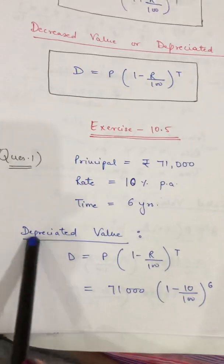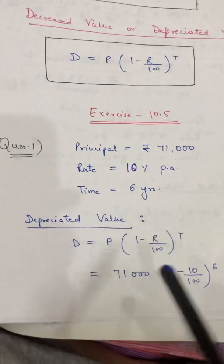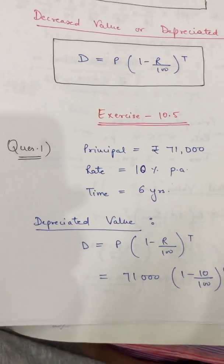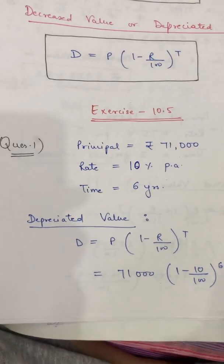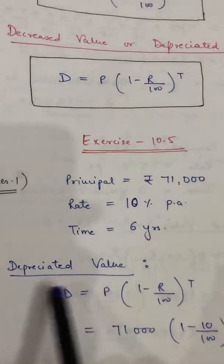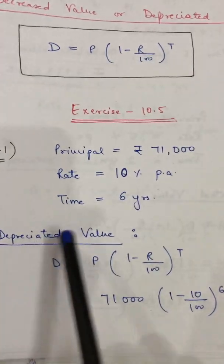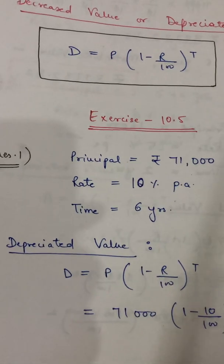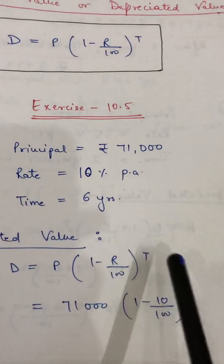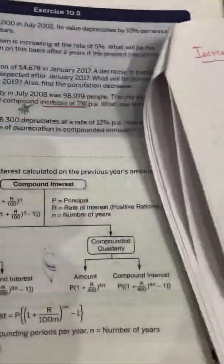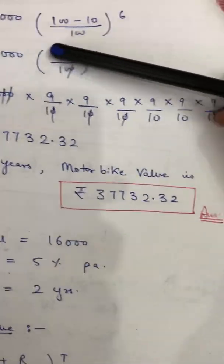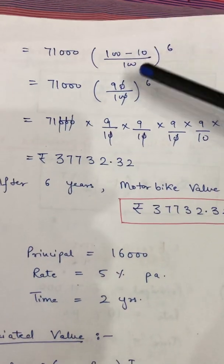Since the value is depreciated, mention this clearly — it helps in exams to write each step properly so you don't lose marks. Apply the depreciation formula: D = Principal × (1 − r/100)^t. After placing all values, take the LCM: (100 − 10)/100 = 90/100.